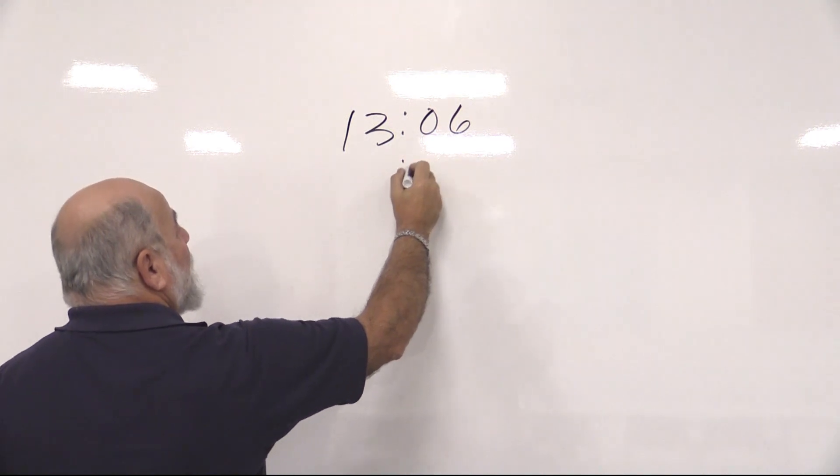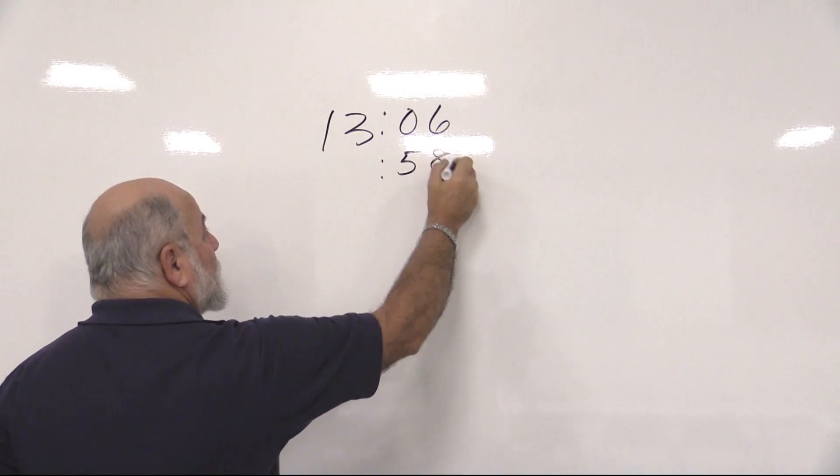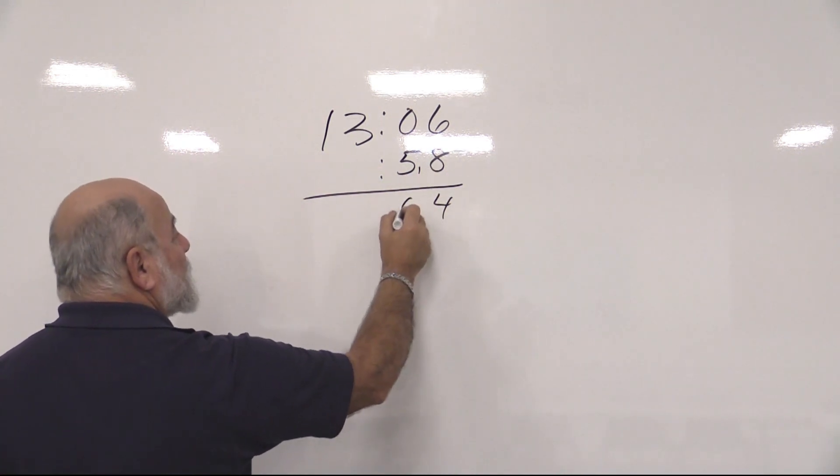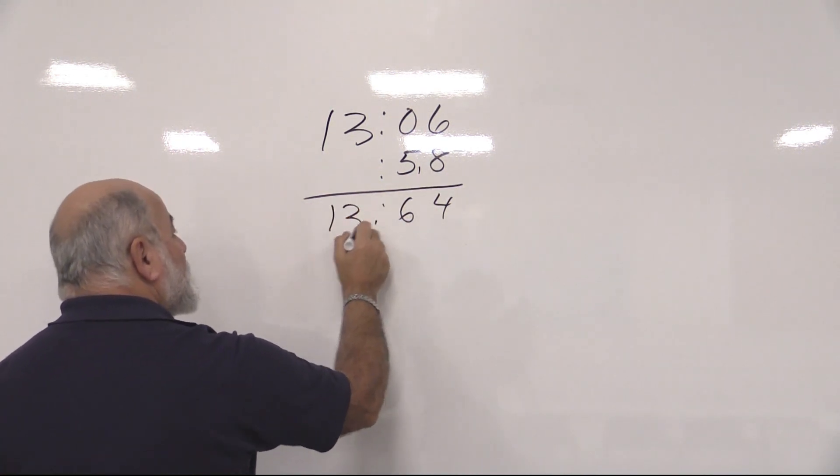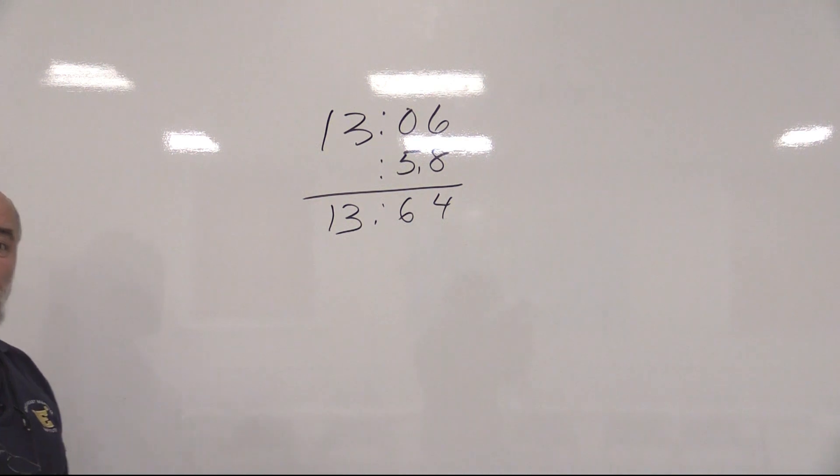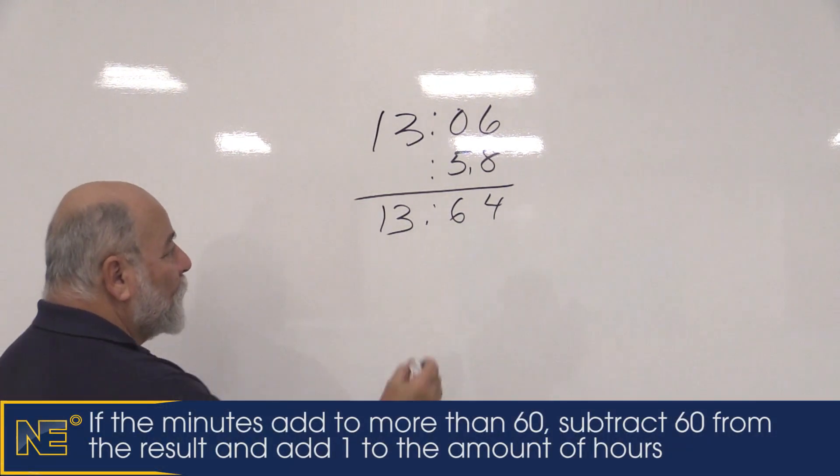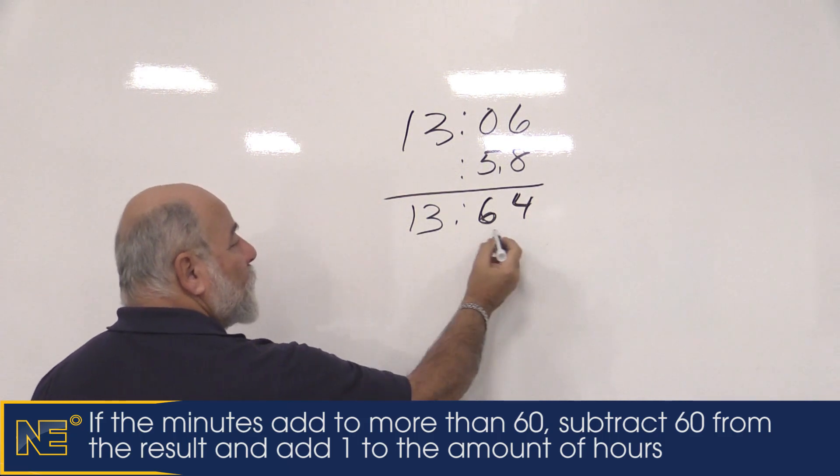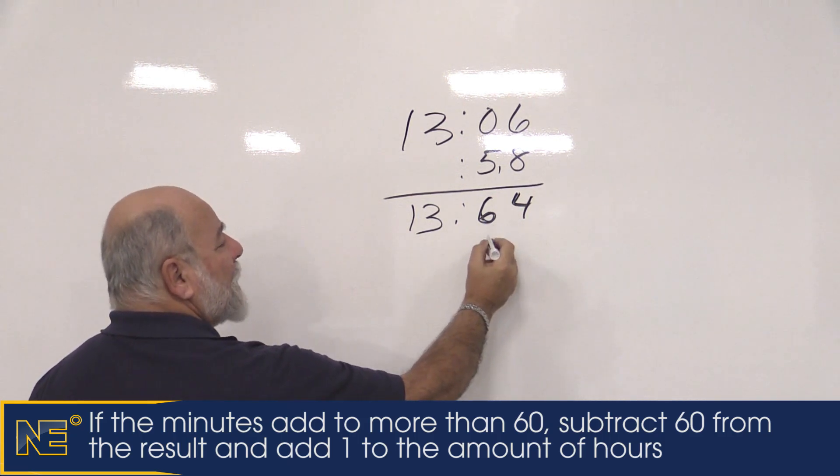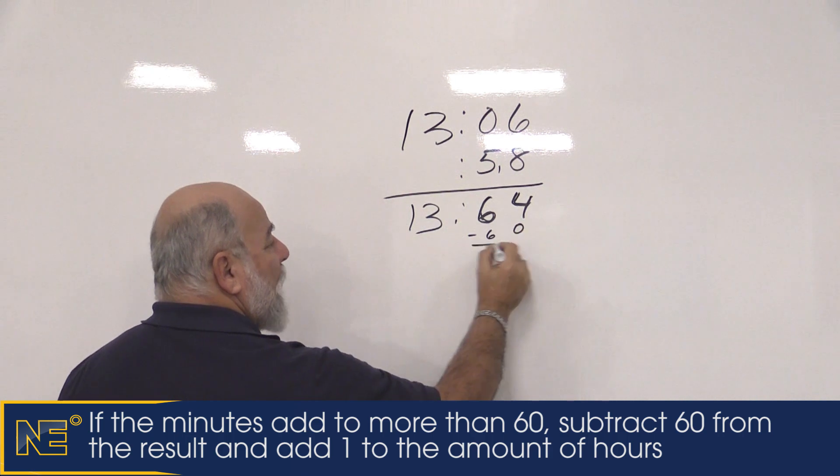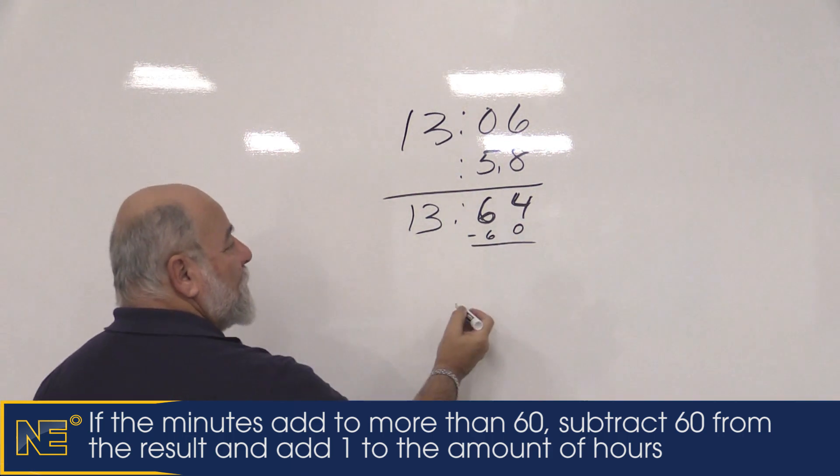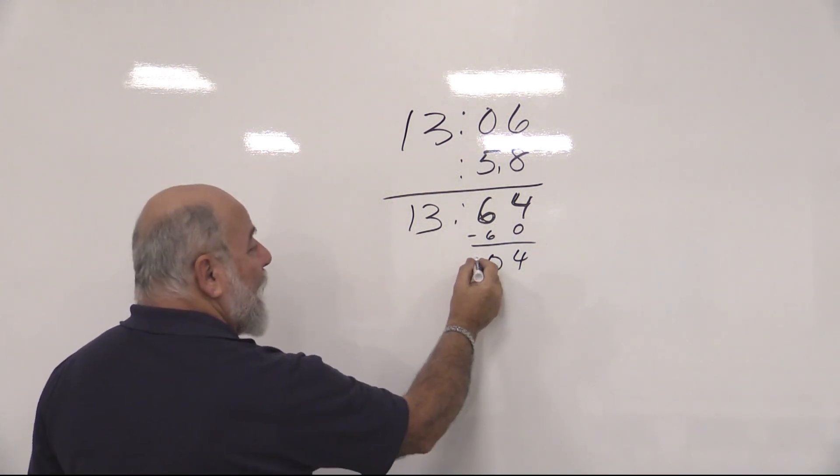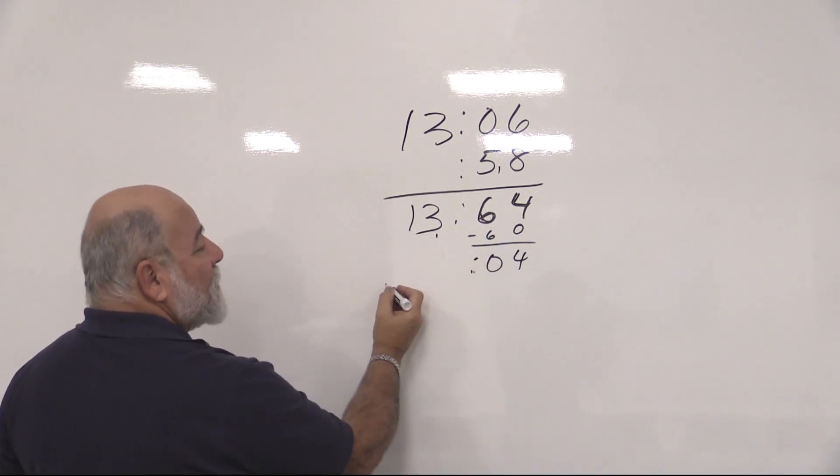If we were going to add 1306 and we had to add 58 minutes, simple math: 8 and 6 is 14, carry 1, 5 and 1 is 6. 1364. But there is no such time as 1364. We have 60 minutes to an hour, so what we need to do is turn this back to minutes. We know that there's 60 minutes in an hour. We're going to subtract 60 from here and add that hour over here, so our time now becomes 1404.